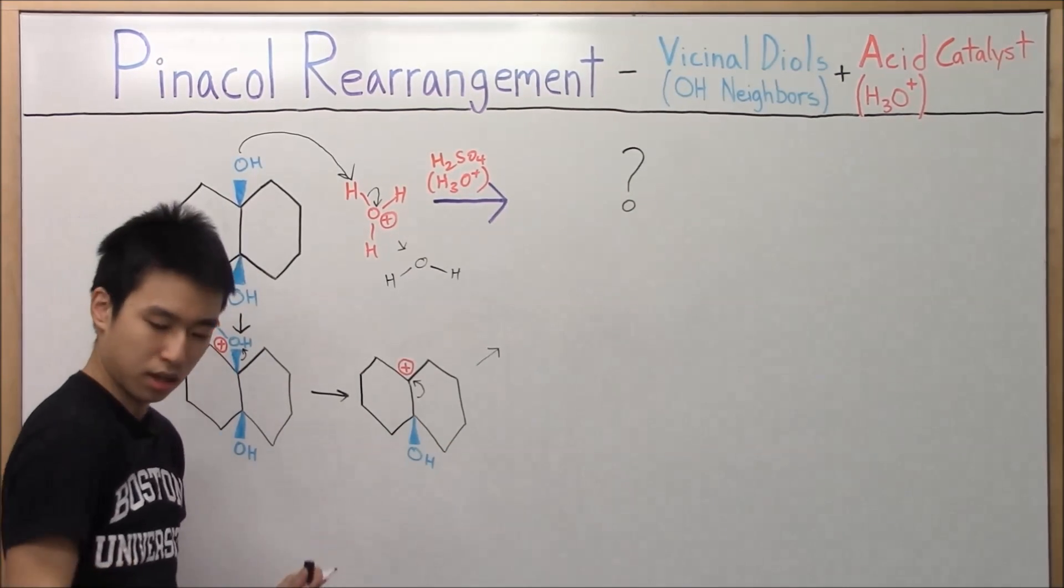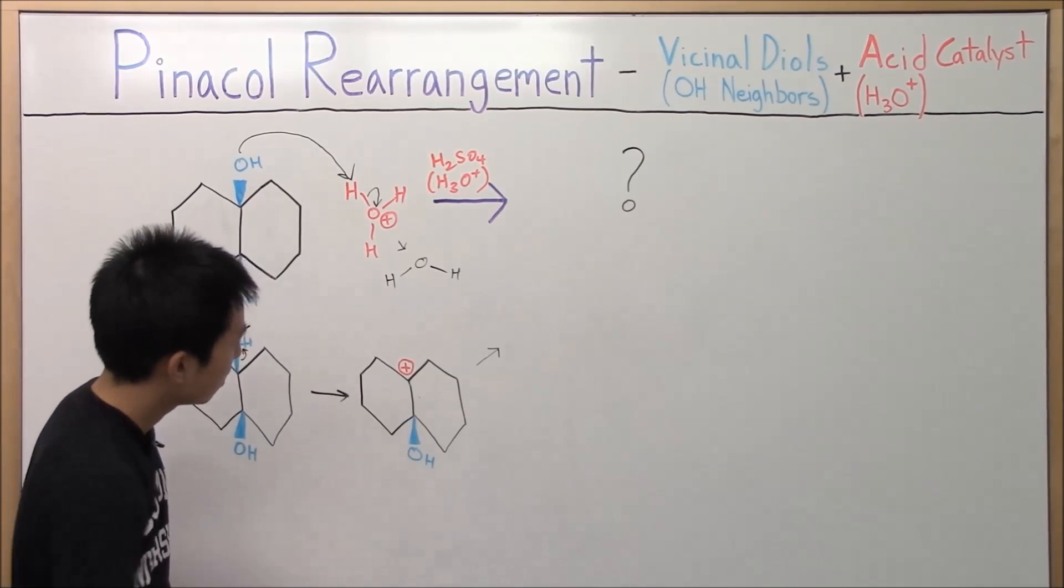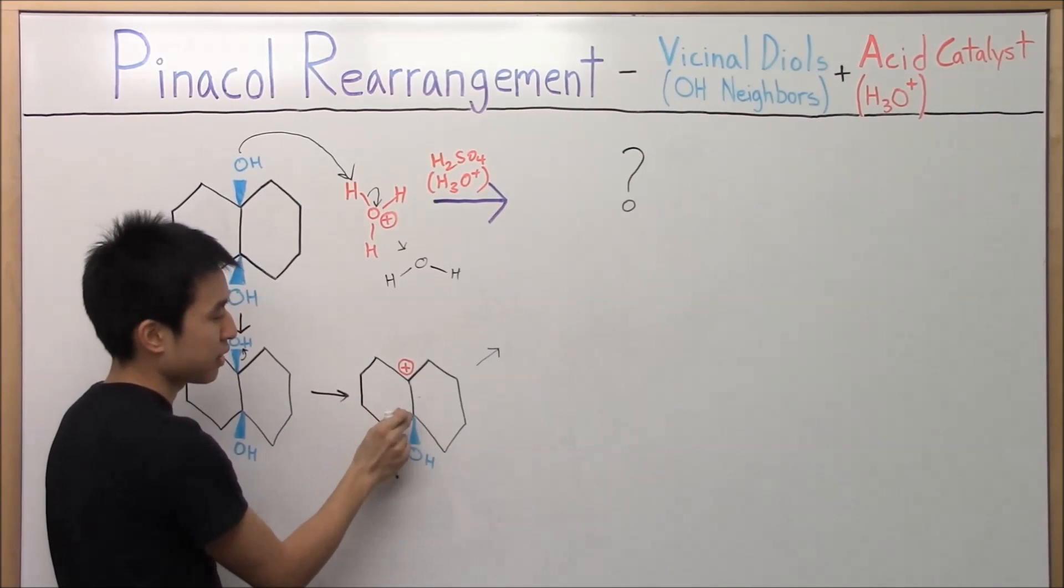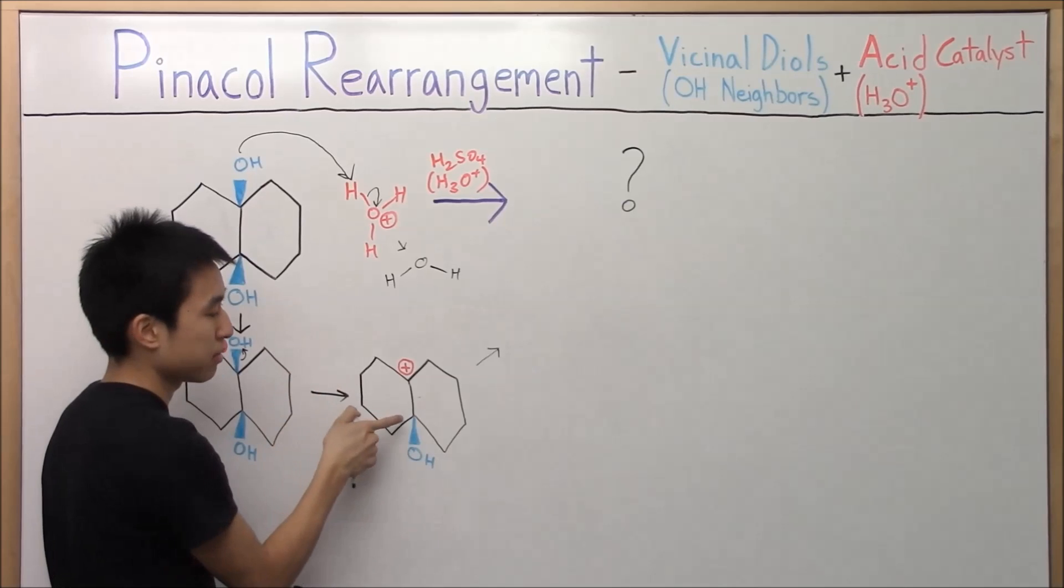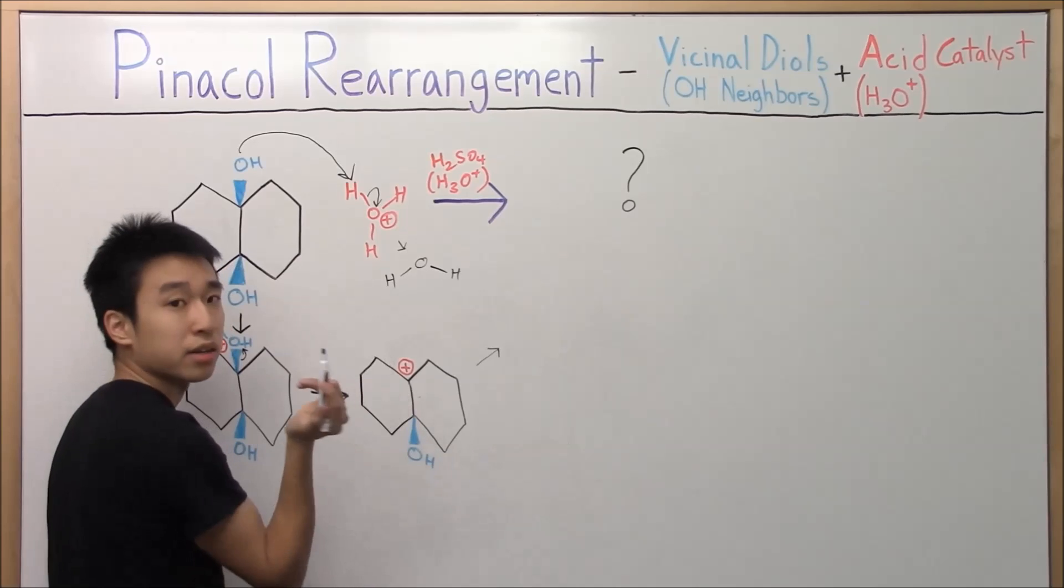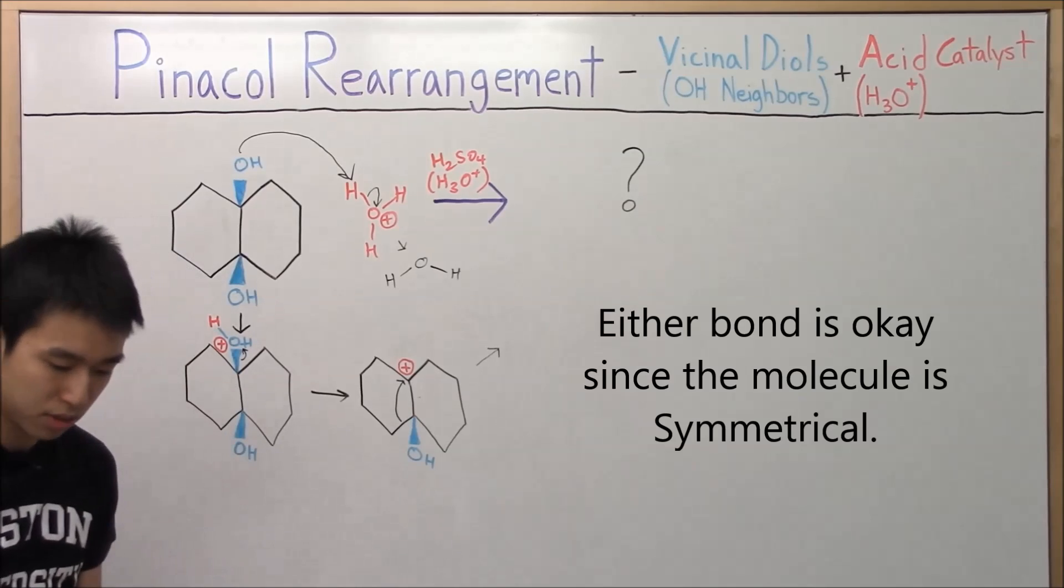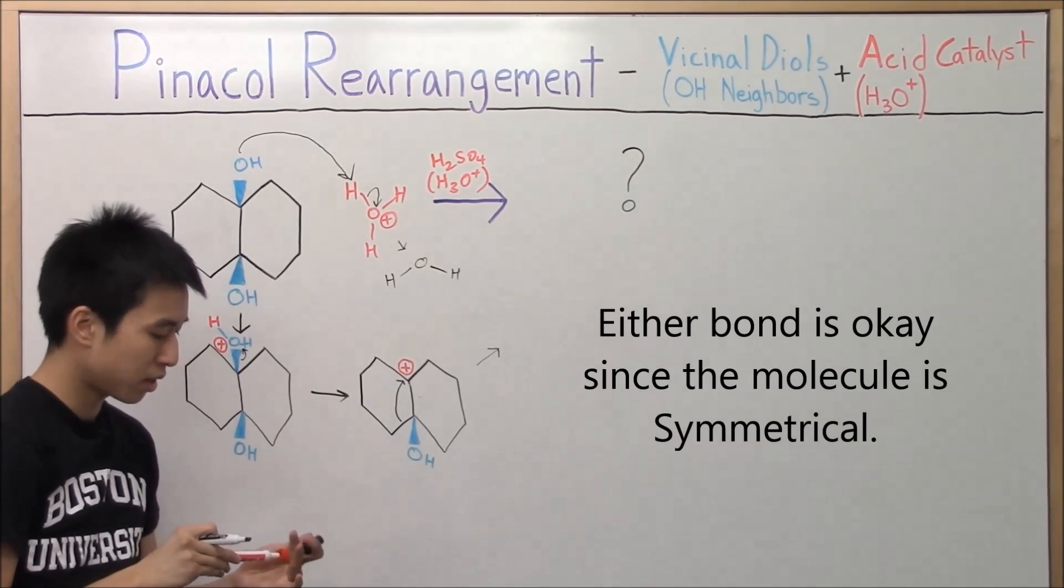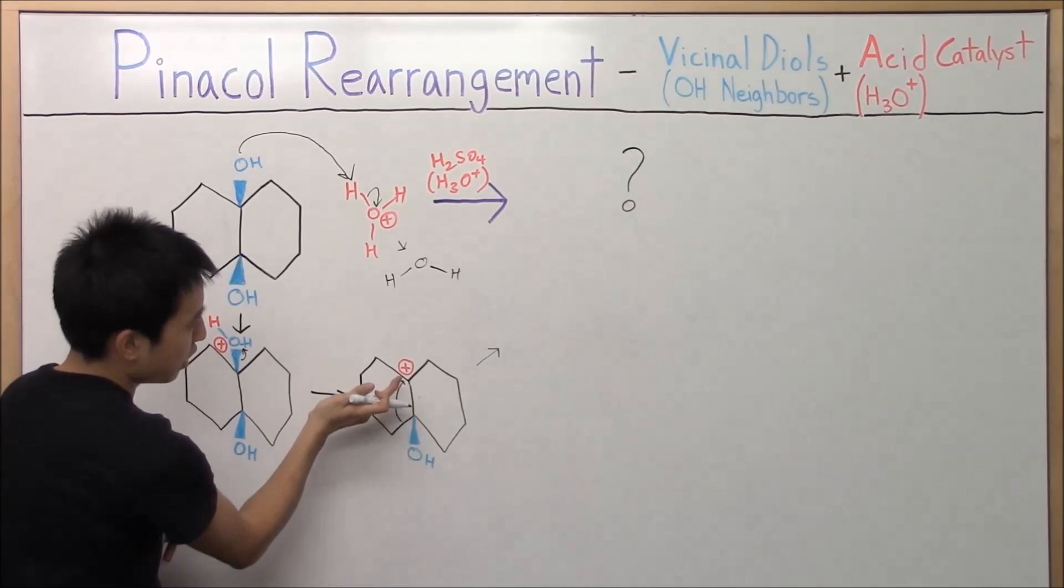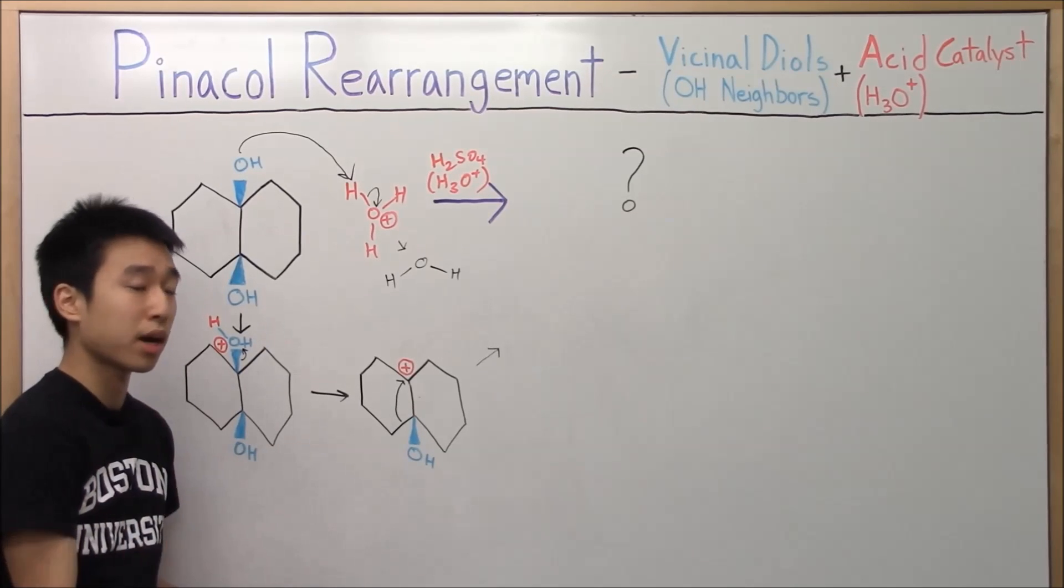So your only other choice is to break one of these bonds with this carbon. Because you have to deprive this carbon of electrons so that it gets a positive charge. I'm going to just arbitrarily choose the left side. So we're going to start from the bond and go to the carbon. I know this might look kind of weird for some of you guys, but we're forced to do a ring contraction. Because we can't do a methyl shift, we can't do a hydride shift.